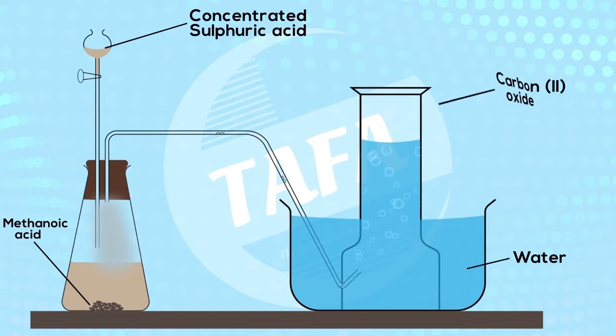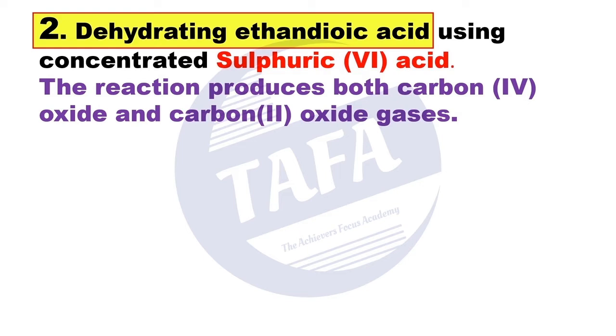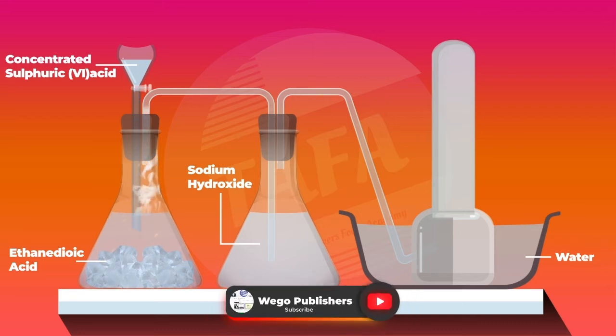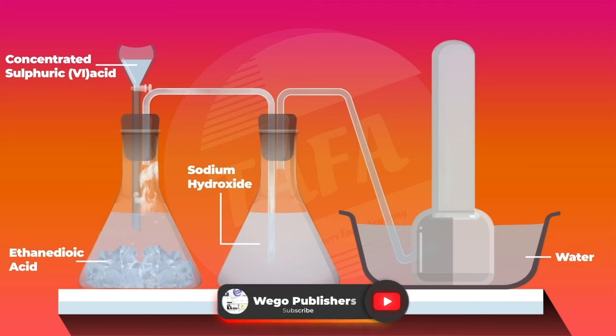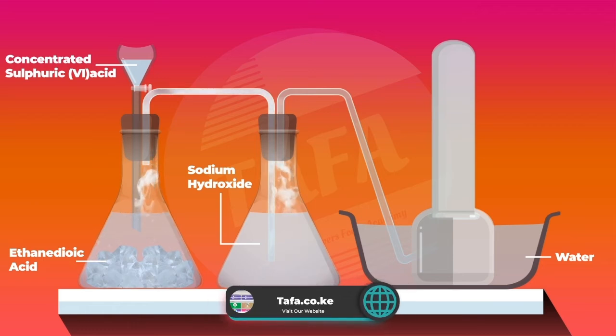The second method is dehydrating oxalic acid (ethanedioic acid) by use of concentrated sulfuric acid. I know the many acids we mentioned in Form One and part of Form Two were all in solution form. Now here we have a case of an acid that is in solid form, and that is oxalic acid. This reaction produces both carbon dioxide (CO2) and carbon monoxide (CO) gas.